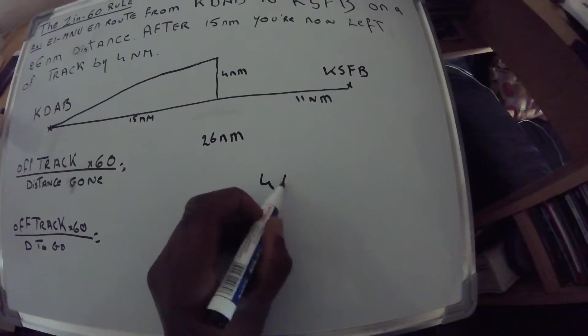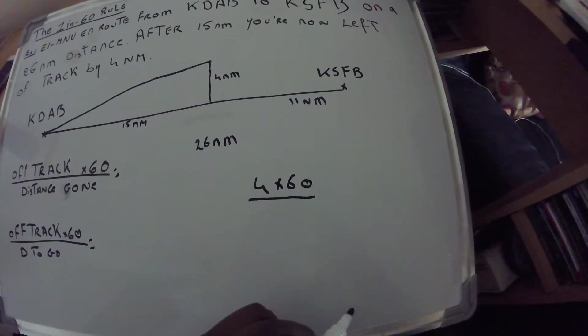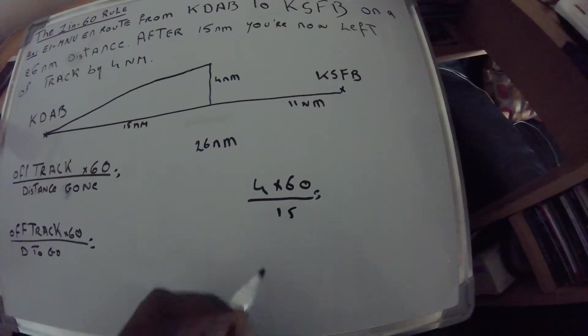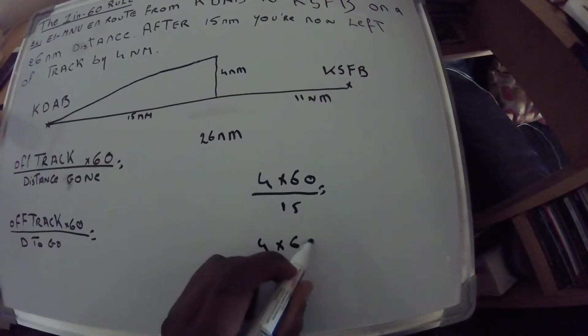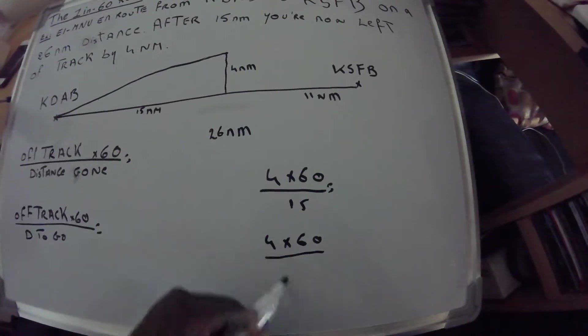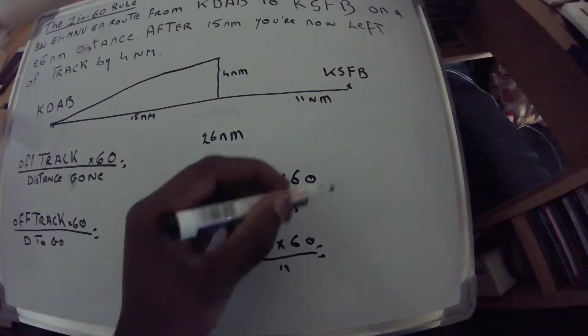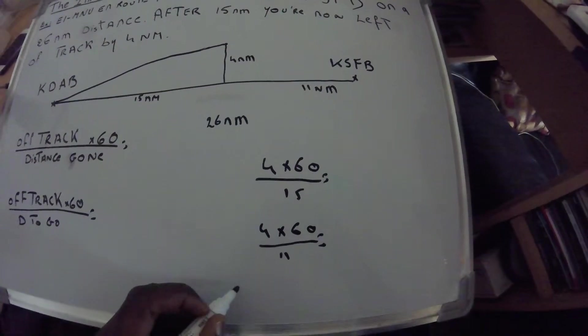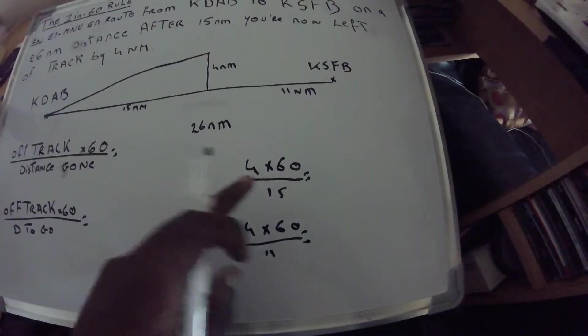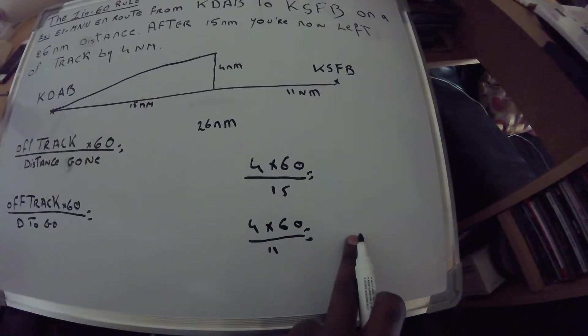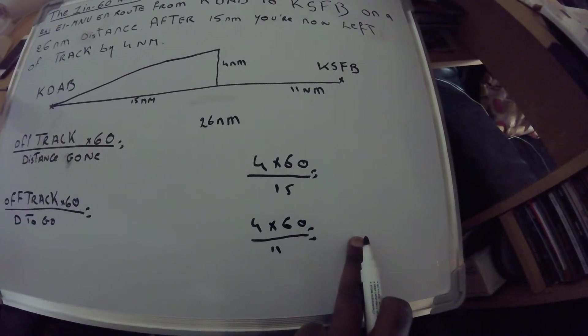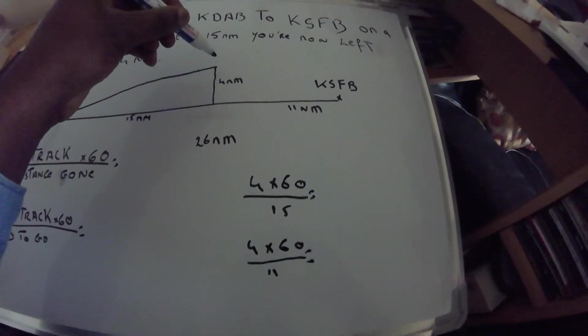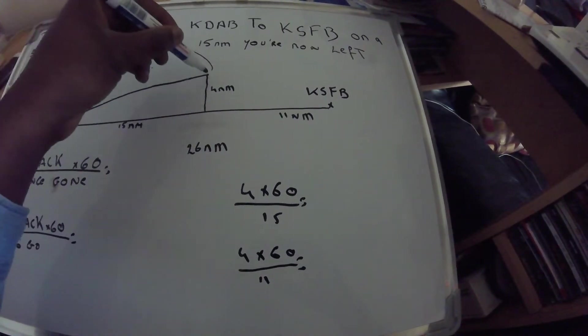So it would be 4 multiplied by 60 divided by distance to go, which is 11 nautical miles. After those, you add those two together. You have to know how to turn now because you are already on the left. So if you turn left in heading, you're gonna be going further this way. Therefore, you need to turn right.